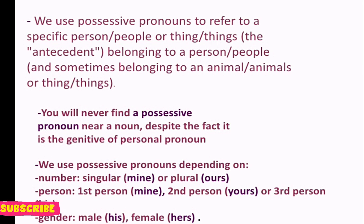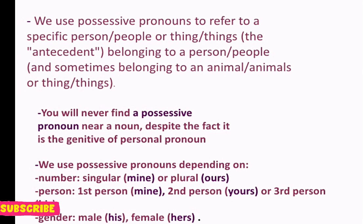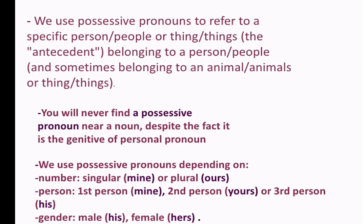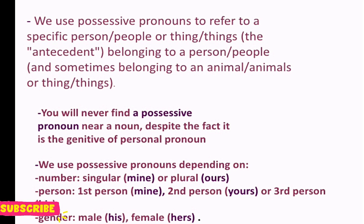Thing to thing possession کے لیے ہم apostrophe لگاتے ہیں، جیسے chair's arm — یعنی کہ non-living thing کے لیے ہم ہمیشہ apostrophe لگاتے ہیں possession show کرنے کے لیے۔ اور جو living things ہمارے پاس ہیں اس کے لیے ہم 'of' use کرتے ہیں۔ Personal pronoun میں ہم یہ چیزیں use کرتے ہیں: my, mine, her, his, him وغیرہ۔